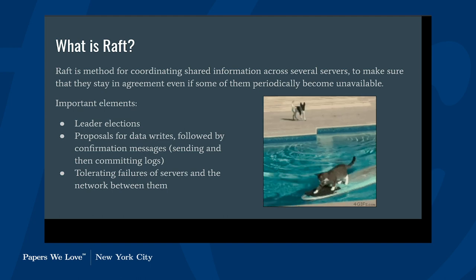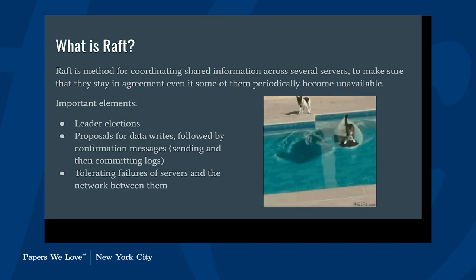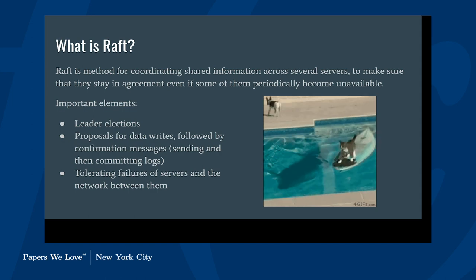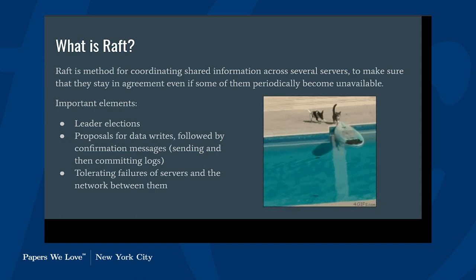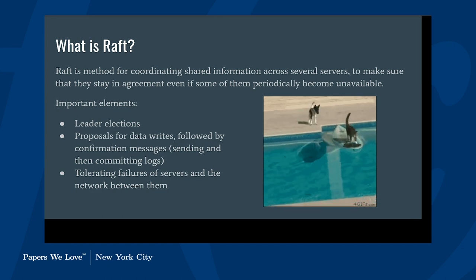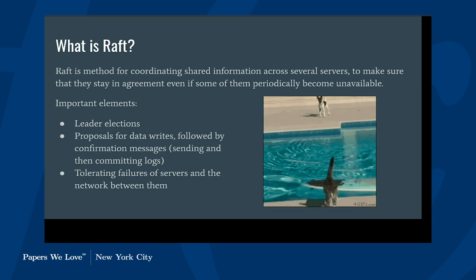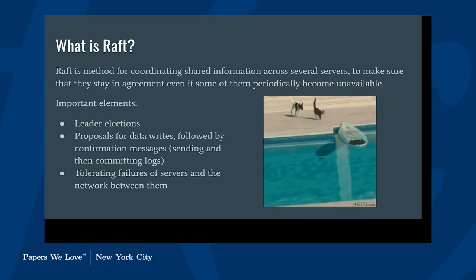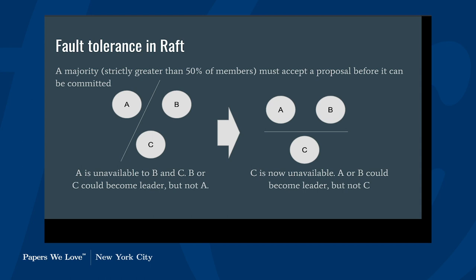The important thing this accomplishes is that some number of members of the cluster can be unavailable — they could be down, restarting, or experiencing a network outage — and as long as there aren't too many failures, you're still able to write data. What this looks like is: you have a leader that is able to connect to and win an election from at least 50% of the members of the cluster.